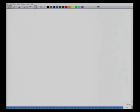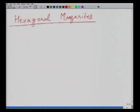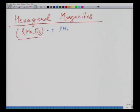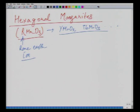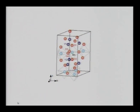Another class of materials is hexagonal manganites, typically called RMnO₃, with examples like YMnO₃ and TbMnO₃, where R is a rare-earth ion. These are hexagonal structured materials.